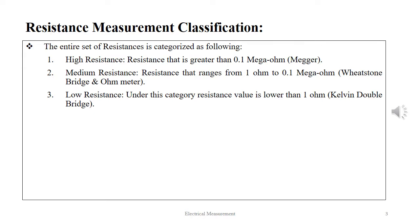The entire set of resistances is categorized as follows: high resistance, medium resistance, and low resistance. Resistance above 0.1 mega ohm is categorized as high resistance; the mega ohm setup is used to measure this range. Resistance between 1 ohm and 0.1 mega ohm is termed medium resistance, measured by a Wheatstone bridge or ohmmeter. Resistance below 1 ohm is low resistance, measured by the Kelvin double bridge.